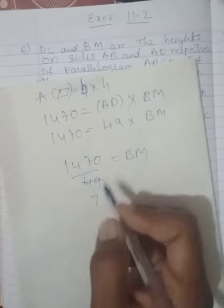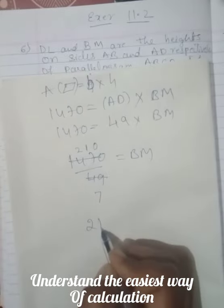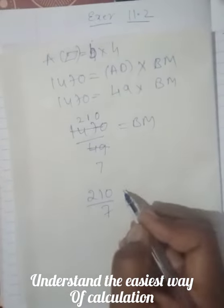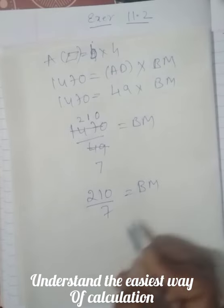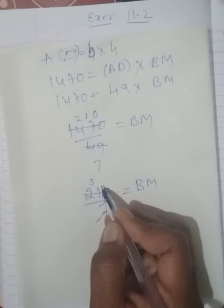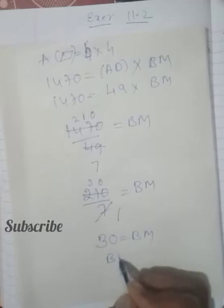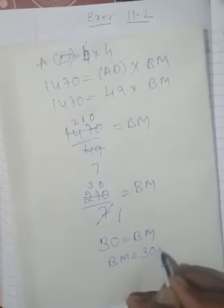1470 upon 49 is equal to BM. By what? 7 sevens are... so here 7 twos are 14, 7 and 0. So here 210 upon 7 is equal to BM. So very simple calculation. 7 and 0. 7 into 21. Yes. This is 0. 30 is equal to BM, or BM is equal to 30 centimeters.